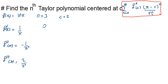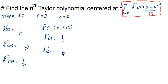We evaluate at c equals 2. f(c) = ln(2), which we leave as is. f prime(c) = 1/2. f double prime(c) = −1/4. The third derivative at c: 2 over 2 cubed equals 2/8, which is 1/4.